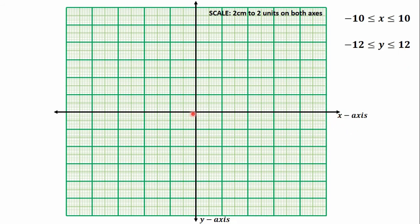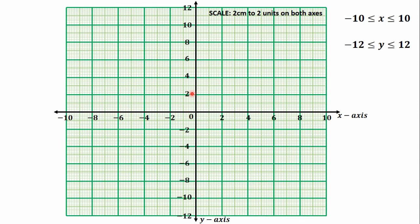So we have our X and Y axes here. They meet at the center point, which is 0. We can now number our X axis from minus 10 to positive 10, increasing by 2 from one major grid line to the next: minus 10, minus 8, minus 6, minus 4, minus 2, 0, 2, 4, 6, 8, 10. The Y axis goes 2, 4, 6, 8, 10, 12 and minus 2, minus 4, minus 6, minus 8, minus 10, minus 12. So we are now done with the first part of our question.